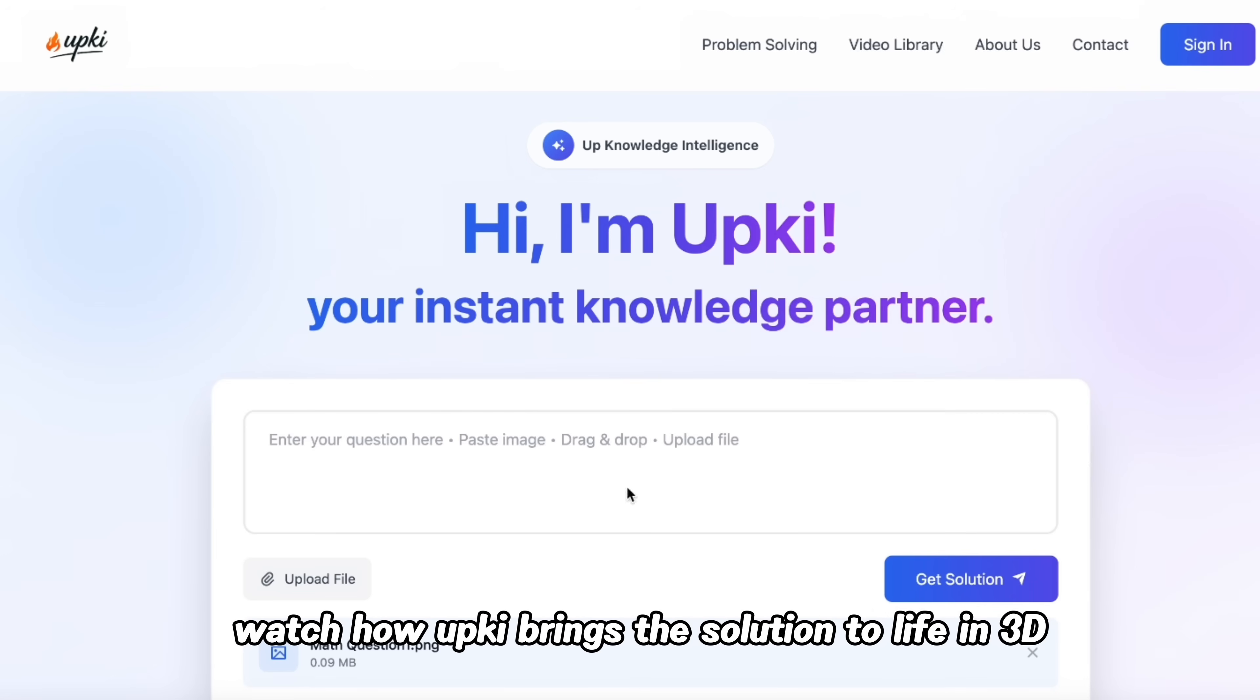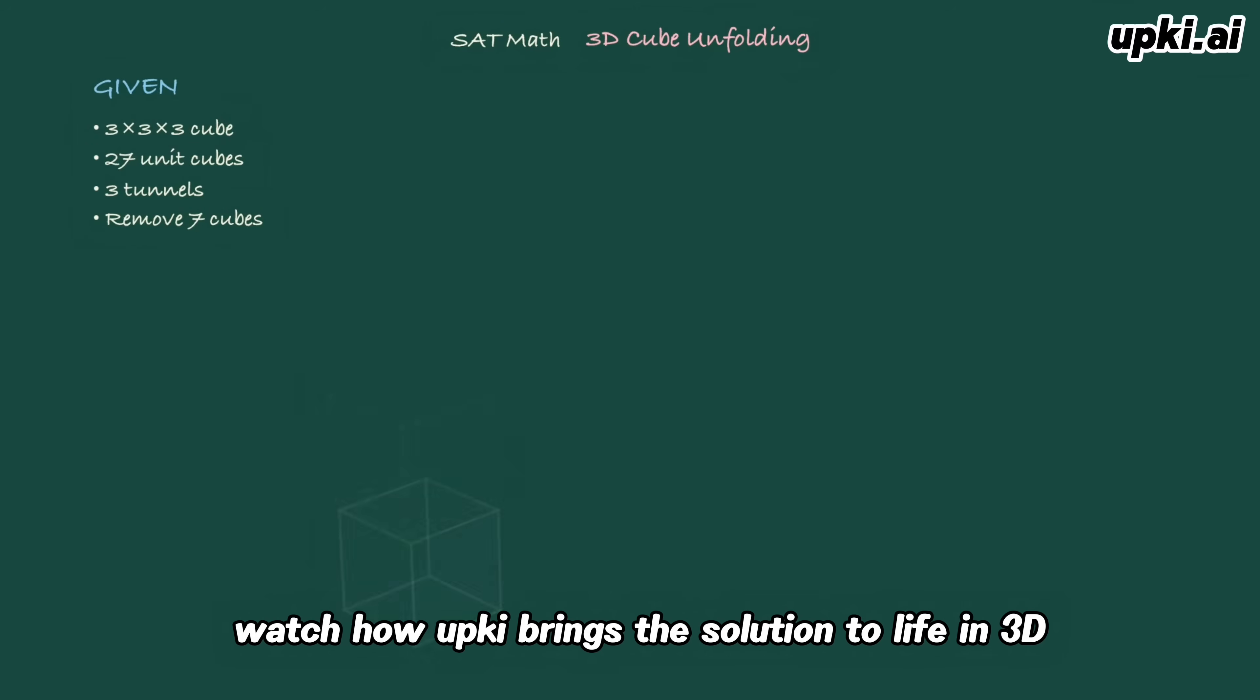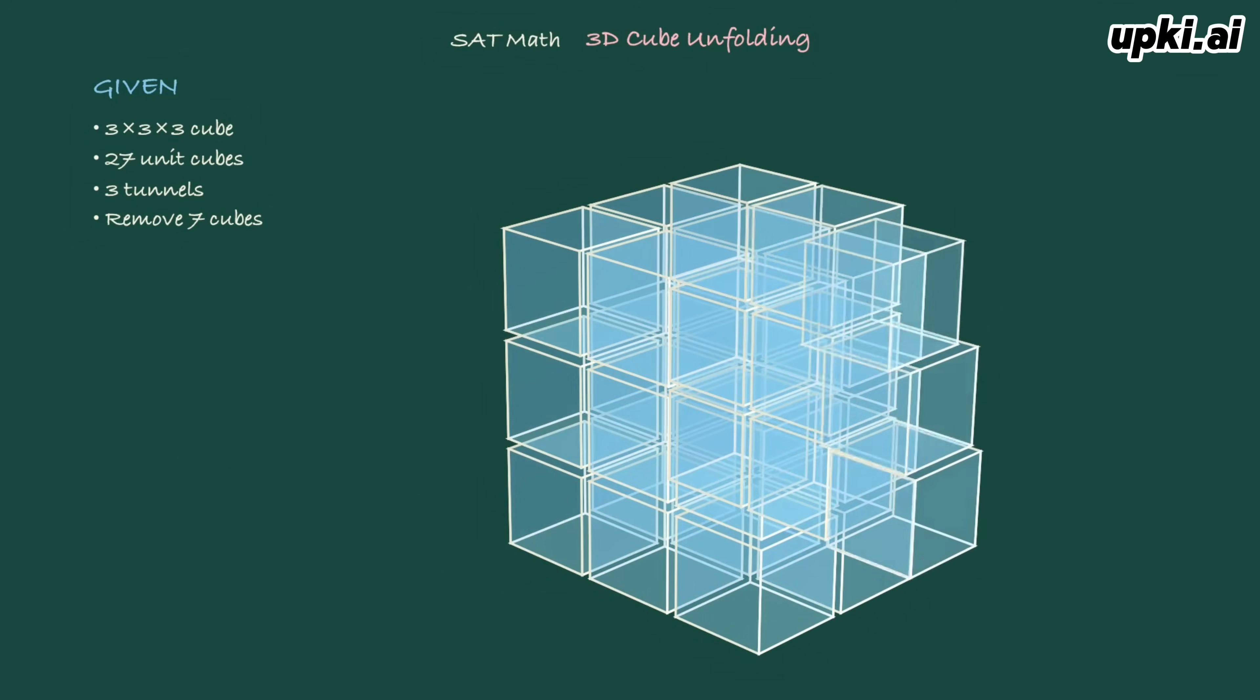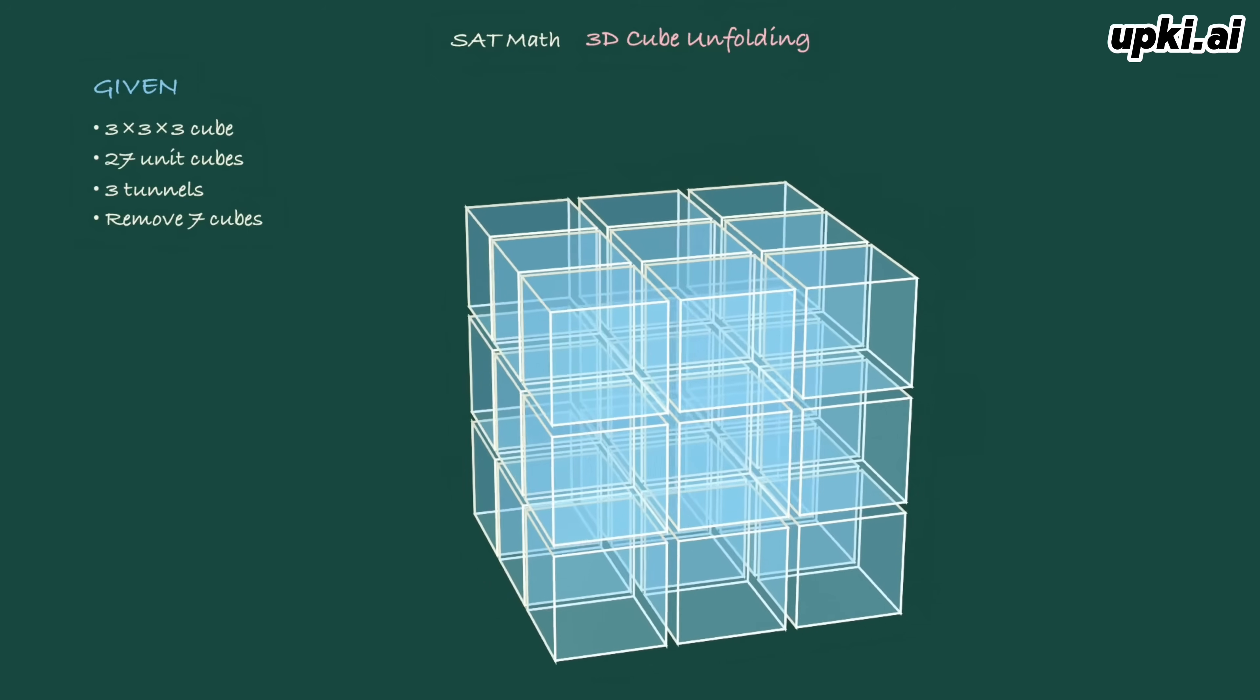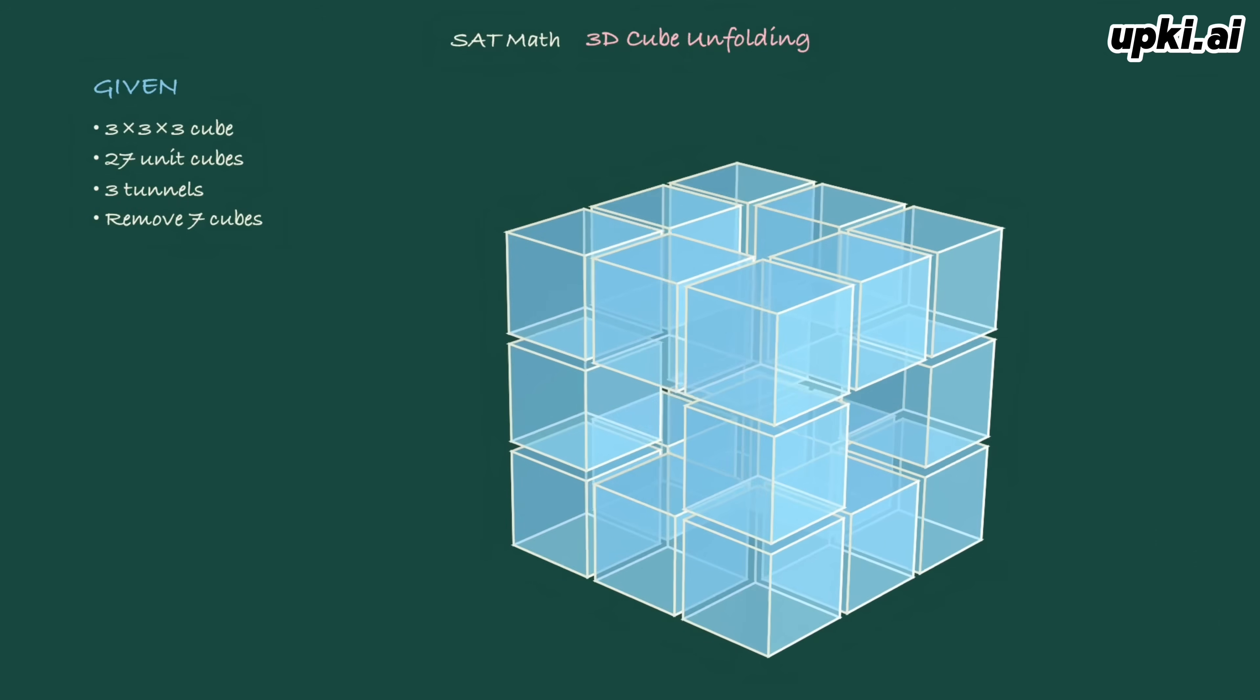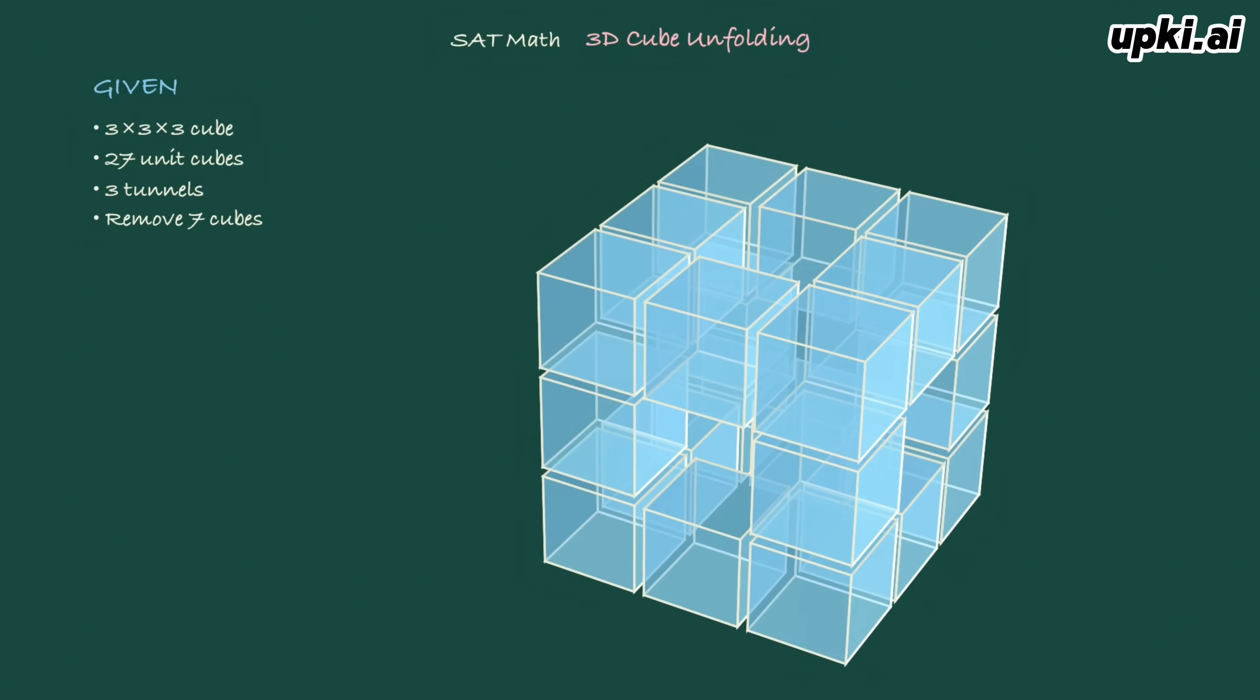Solid geometry is hard to explain with just words. Watch how AppKey brings the solution to life in 3D. This forms a solid 3x3x3 cube. We drill three perpendicular tunnels through the center. Removing these seven cubes creates the tunnels. You can see the empty space passing all the way through.